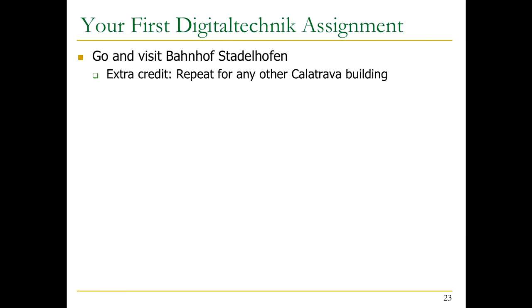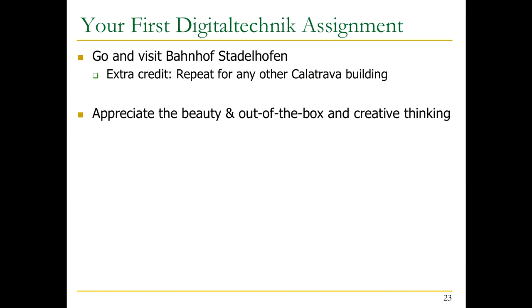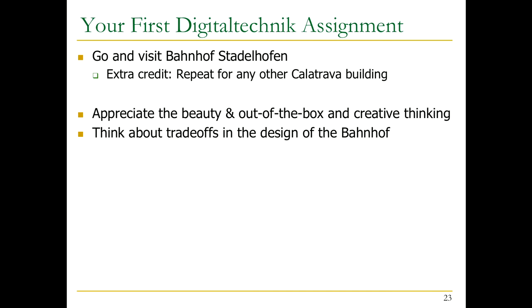The last important piece of an algorithm — have you learned about what an algorithm is in the past? It has to terminate. That's the third critical thing. Because the list of buildings is finite, the algorithm should be able to terminate. Now you can execute this human algorithm as part of your first assignment. I'm happy if you just go to Bahnhof Stadlhofen. I would encourage you to appreciate the beauty and the out-of-the-box creative thinking of the structure, and think about the trade-offs in the design. You can come up with many even before taking this course — in terms of cost, space, functionality. But we apply these to computers also.